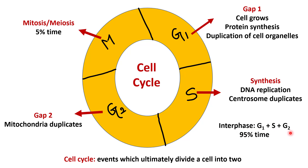Now in this interphase, actual cell division does not occur. During interphase, the cell prepares for division. Next is M phase, where actual cell division occurs. M phase could be either mitosis or meiosis. In both cases, interphase occurs before the M phase. Interphase takes 95% of the total cell cycle time, whereas M phase takes only 5%.